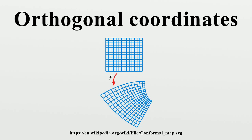There is no widely established notation for vector components with respect to the normalized basis. In this article we use subscripts for vector components and note that the components are calculated in the normalized basis. Vector addition and negation are done component-wise just as in Cartesian coordinates with no complication. Extra considerations may be necessary for other vector operations. Note however that all of these operations assume that two vectors in a vector field are bound to the same point. Since basis vectors generally vary in orthogonal coordinates, if two vectors are added whose components are calculated at different points in space, the different basis vectors require consideration.